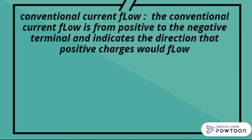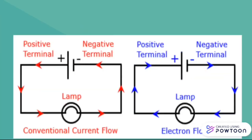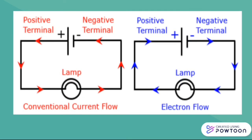Conventional current flow goes from the positive to the negative terminal. Electrons are negatively charged and therefore attracted to the positive terminal. This image shows the movement of the conventional current flow and the electron flow.